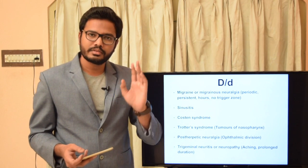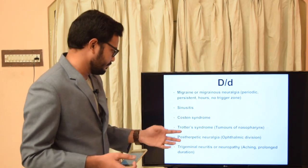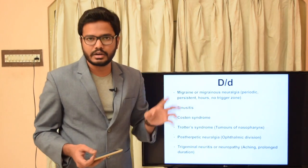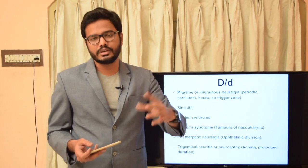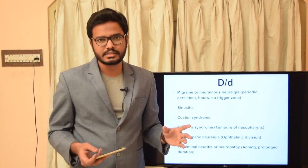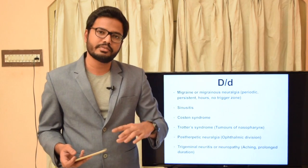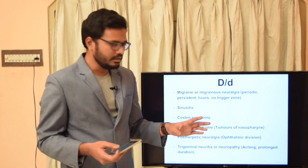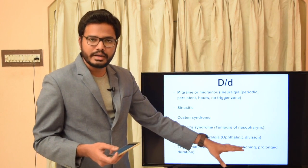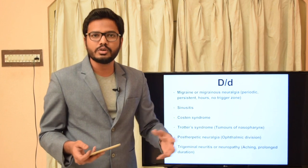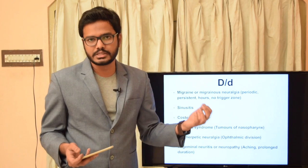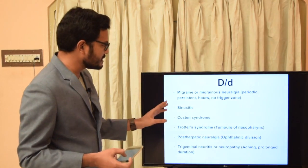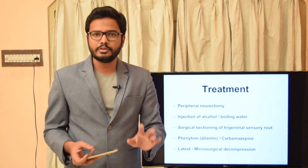Trotter syndrome involves tumors within the nasopharynx, causing pain along the lower jaw, tongue, side of the head, and middle ear deafness. Post-herpetic neuralgia involves viral infection commonly affecting the ophthalmic division, subsiding after two to three weeks, with skin lesions aiding diagnosis. Trigeminal neuritis or neuropathy differs from neuralgia in that pain is more aching, burning, or prolonged — lasting weeks or months — rather than the short, intense bouts of trigeminal neuralgia.